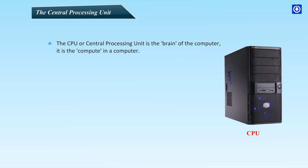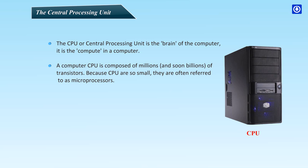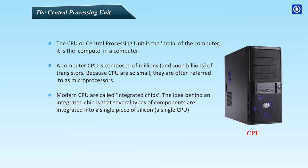The central processing unit: The CPU or central processing unit is the brain of the computer. It is the compute in a computer. A computer CPU is composed of millions and even billions of transistors. Because CPUs are so small, they are often referred to as microprocessors. Modern CPUs are called integrated chips. The idea behind an integrated chip is that several types of components are integrated into a single piece of silicon.